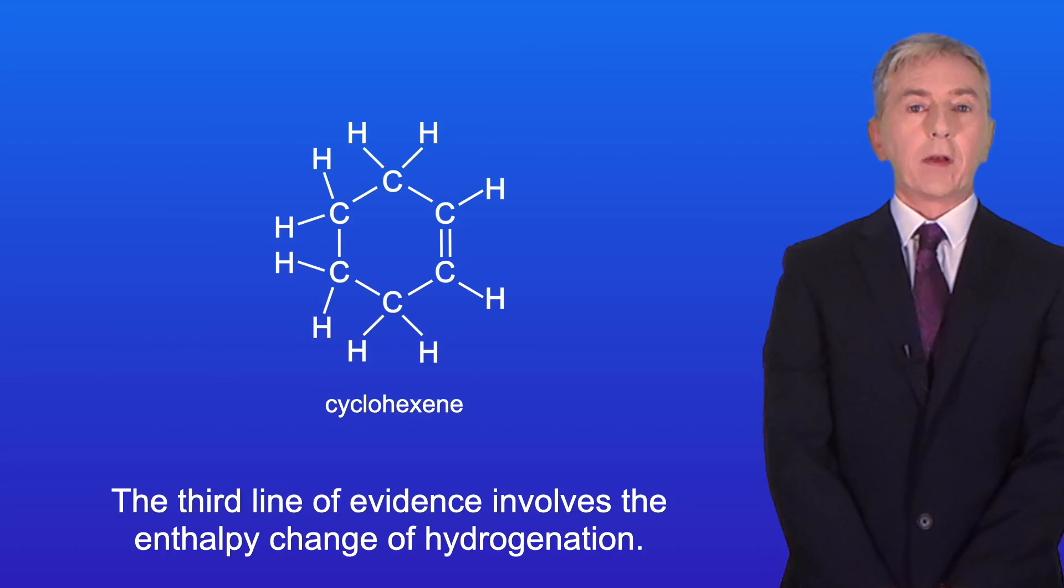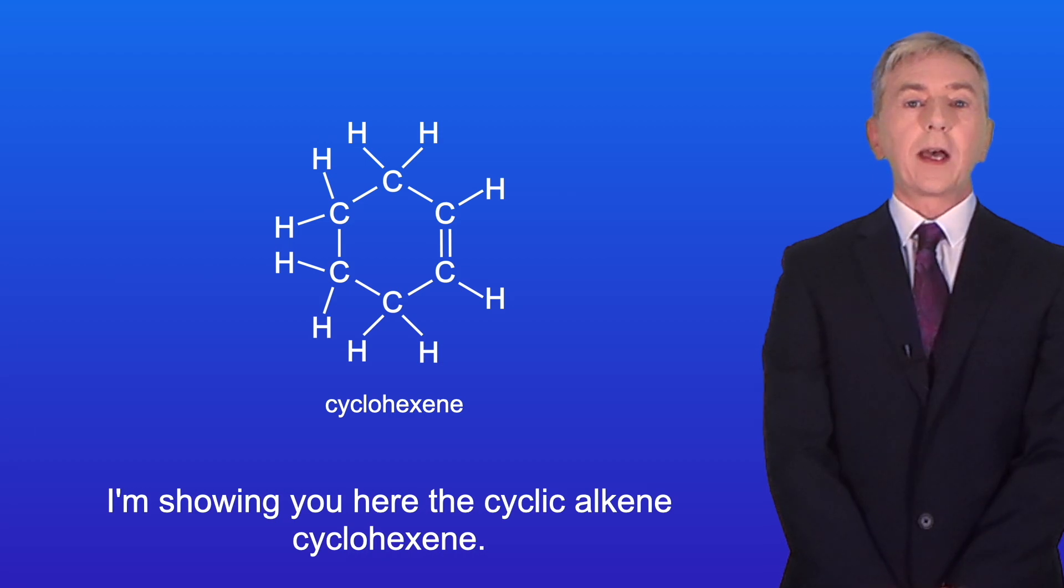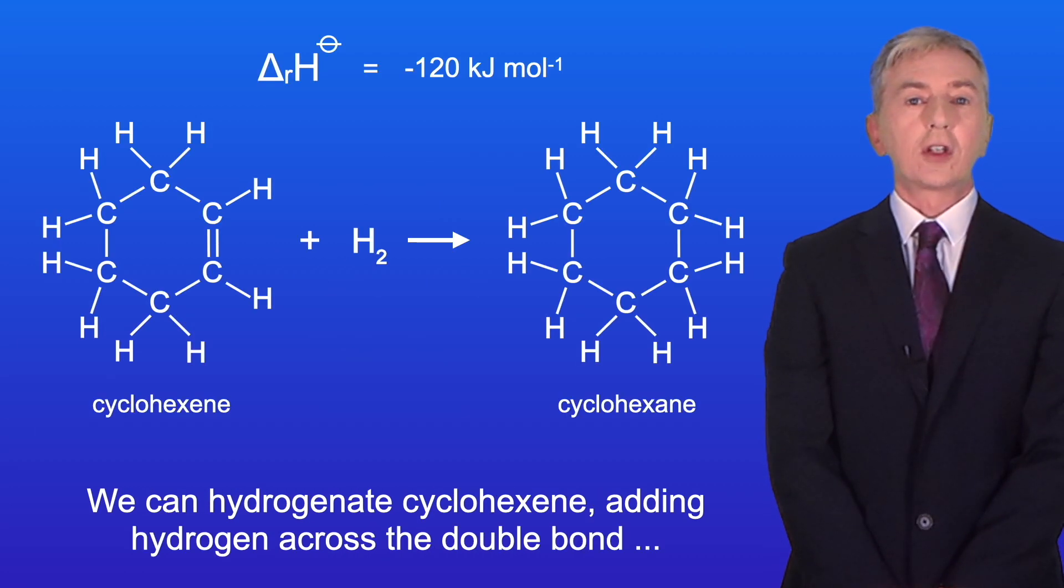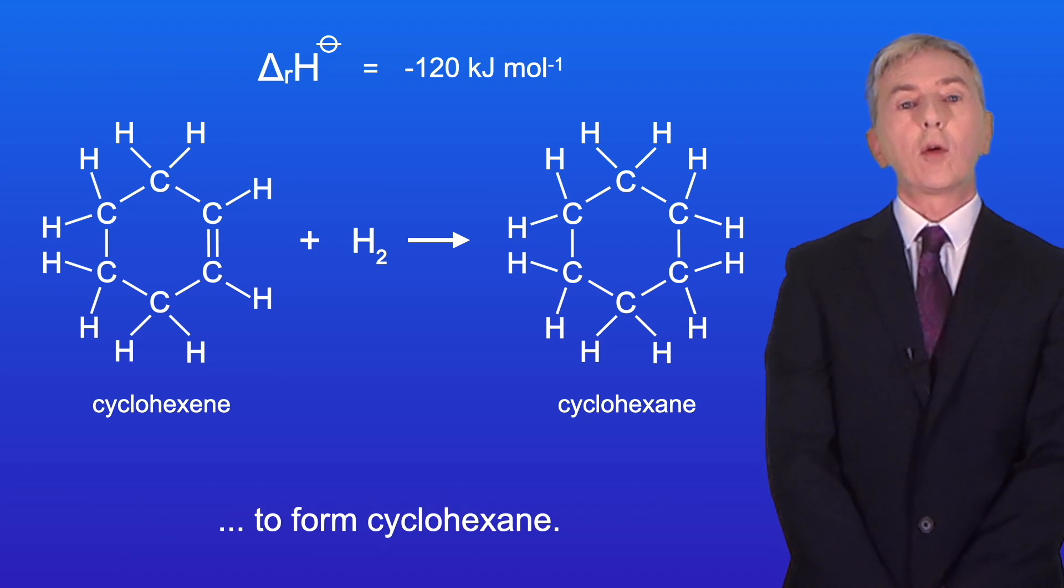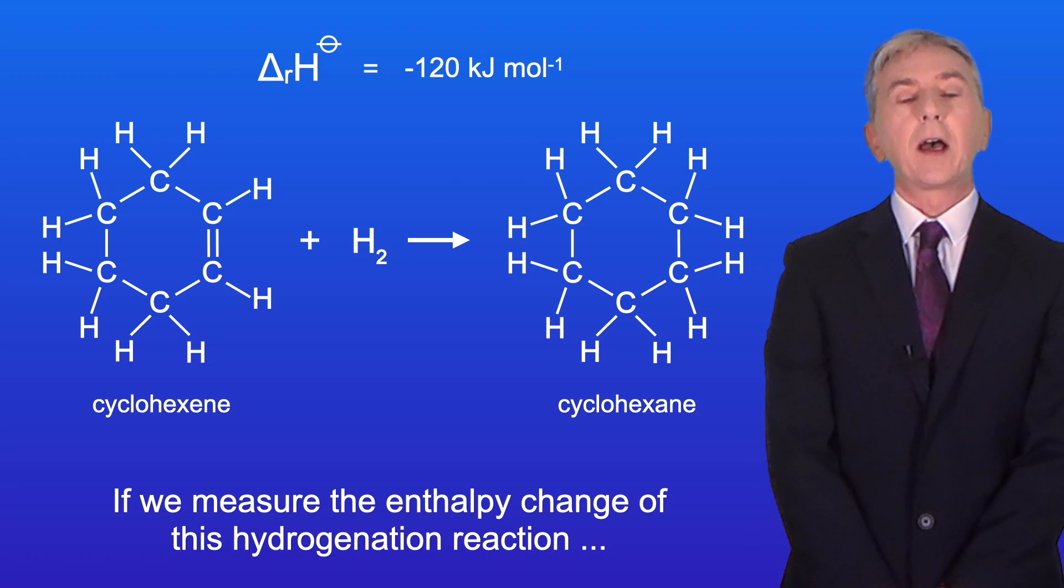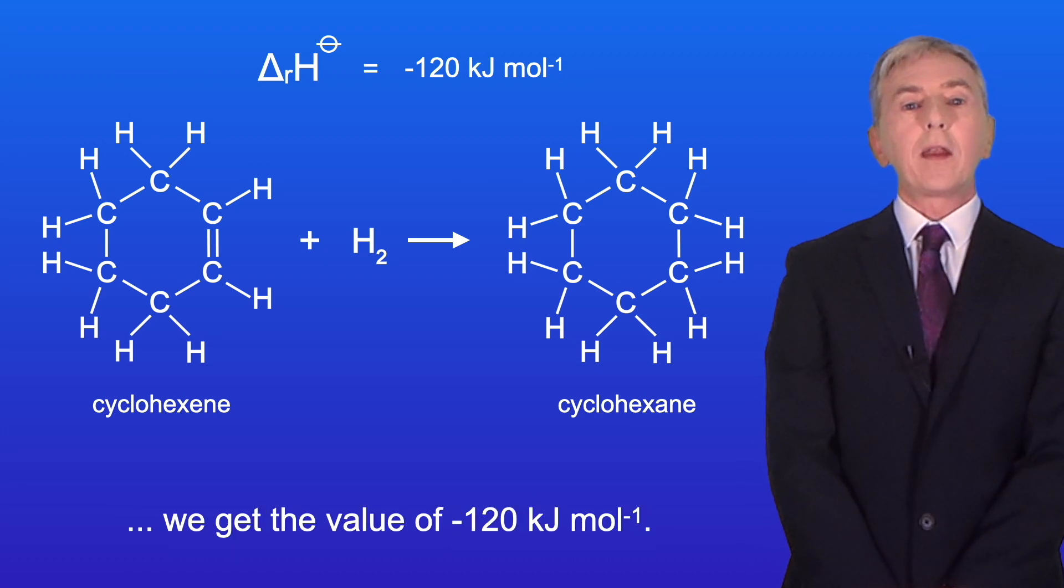The third line of evidence involves the enthalpy change of hydrogenation. I'm showing you here the cyclic alkene cyclohexene. We can hydrogenate cyclohexene adding hydrogen across the double bond to form cyclohexane. If we measure the enthalpy change of this hydrogenation reaction, we get the value of minus 120 kilojoules per mole.